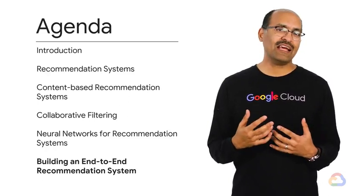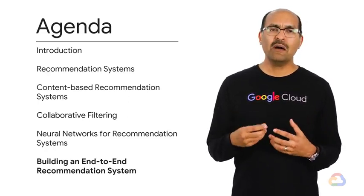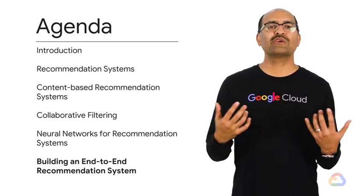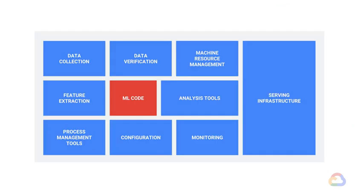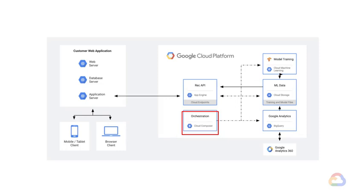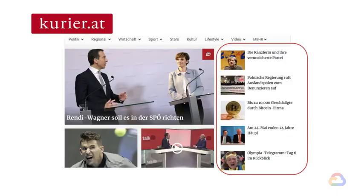Finally, we will see how we can productionize and automate much of the necessary pipeline using the greater Google Cloud Platform ecosystem. Because as we know, the machine learning model is only a small part of the overall system. We will look at the architecture of an end-to-end system for recommendations so that we can orchestrate the continuous retraining of the recommendation system as new ratings data comes in from users. The real-world example we'll use is a week of data extracted from the web logs of Kurier.at, a large news provider in Austria.